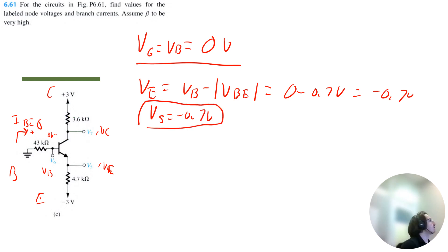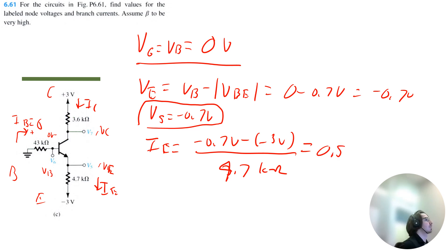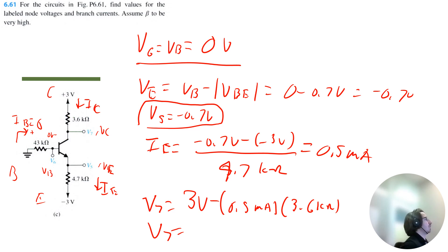Now I just need to find V7. The emitter current equals negative 0.7 volts minus negative 3 volts, divided by 4.7 kilo ohms, which equals 0.5 milliamps. Since beta is very high, that is also the collector current. So V7, the collector voltage, equals 3 volts minus 0.5 milliamps multiplied by 3.6 kilo ohms, which gives V7 equal to 1.2 volts.